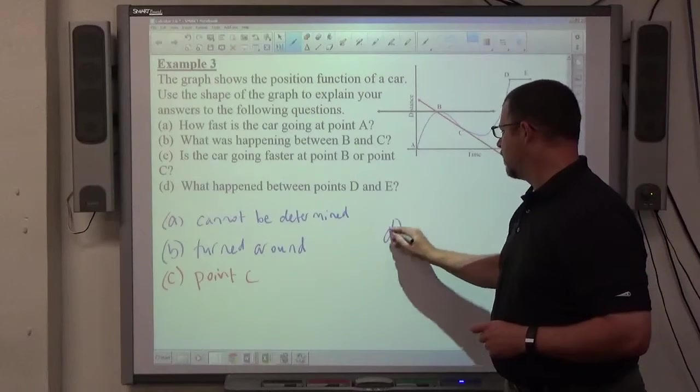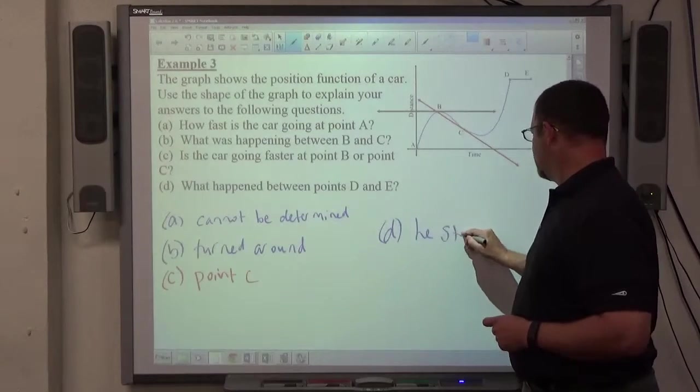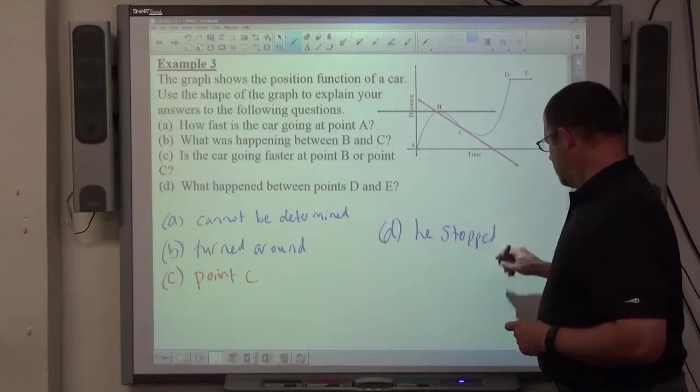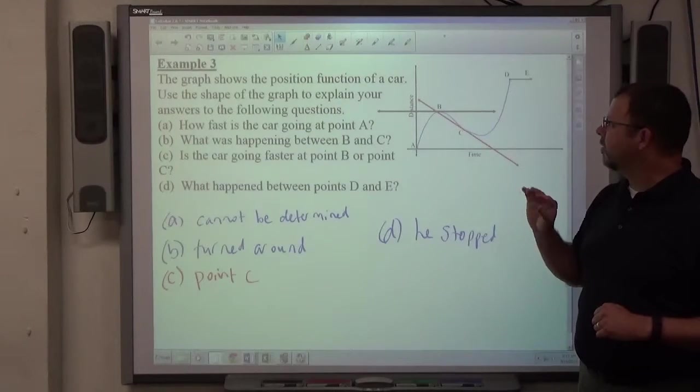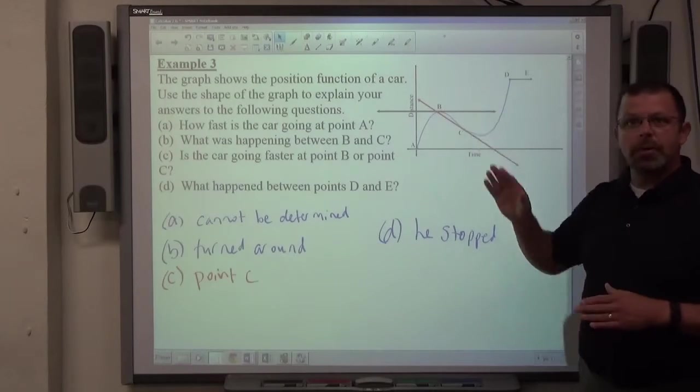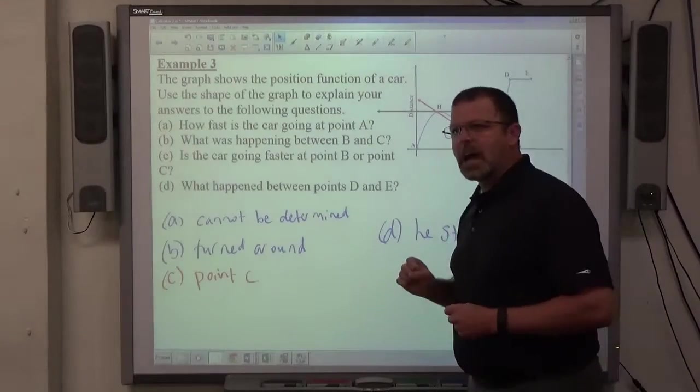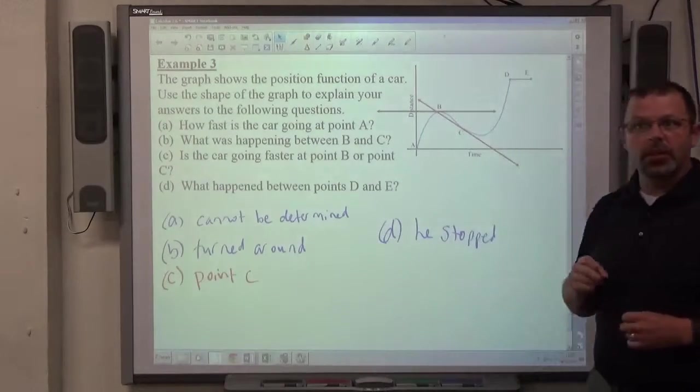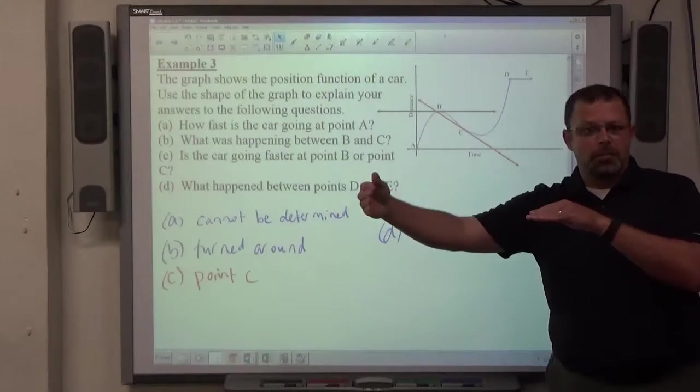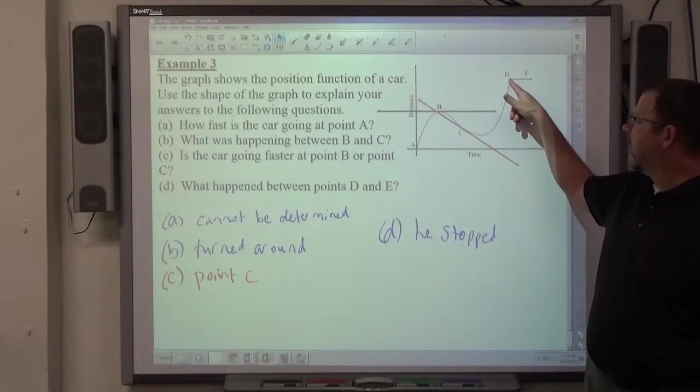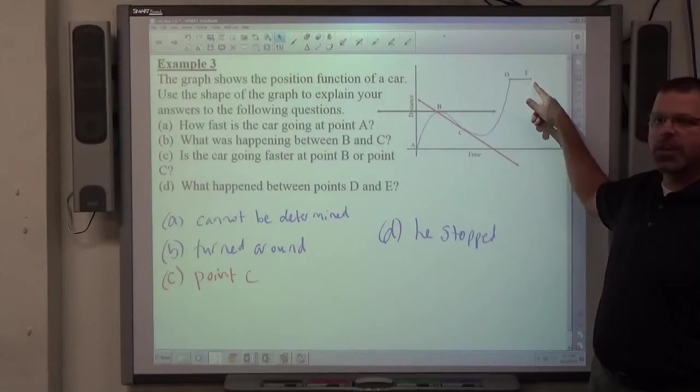So far, part D, we can say he stopped. It could be she. At point B or she. It could be she. I keep on saying he. I'm being a little sexist. It stopped. But at point B, he stopped, and then he immediately went back the other way, right? So, at point B, there's also a stop, but there's an immediate changing of direction where at point D, he stops or she stops and continues to stay stopped.